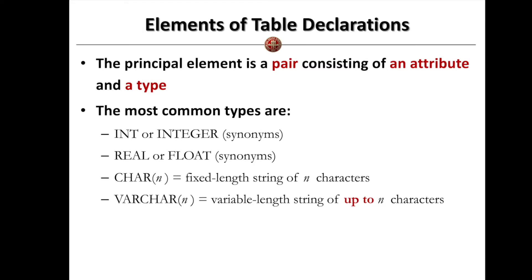When we are creating a table or a relation, we have to declare the types of attributes inside this relation with some data types. The data types we can use in our database system are very similar to programming languages like C++ or Java, but they also have some differences. In this section, we are going to show some very common data types we can use in declaring the relations and tables. The principal element of the attributes is a pair consisting of an attribute name with a type.